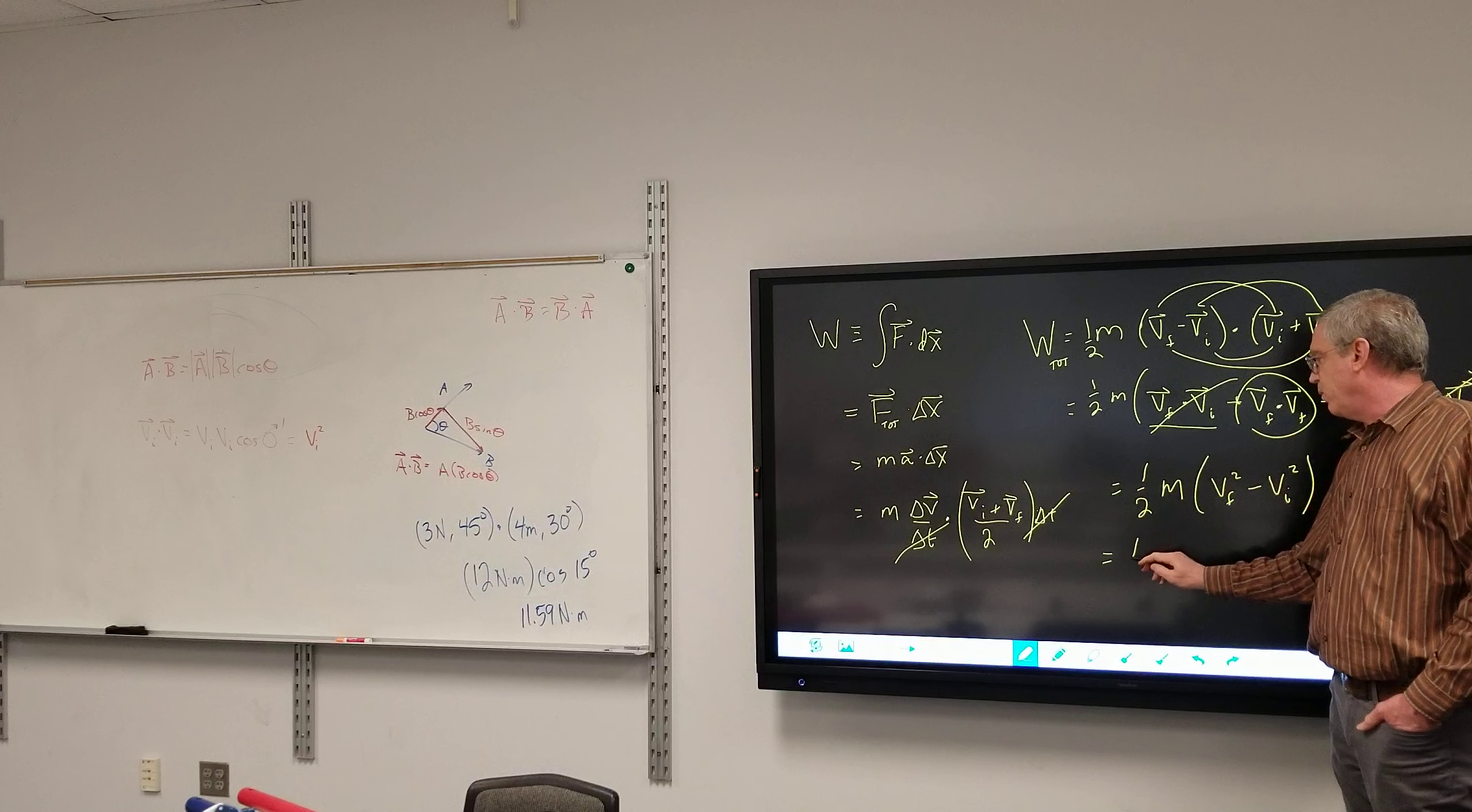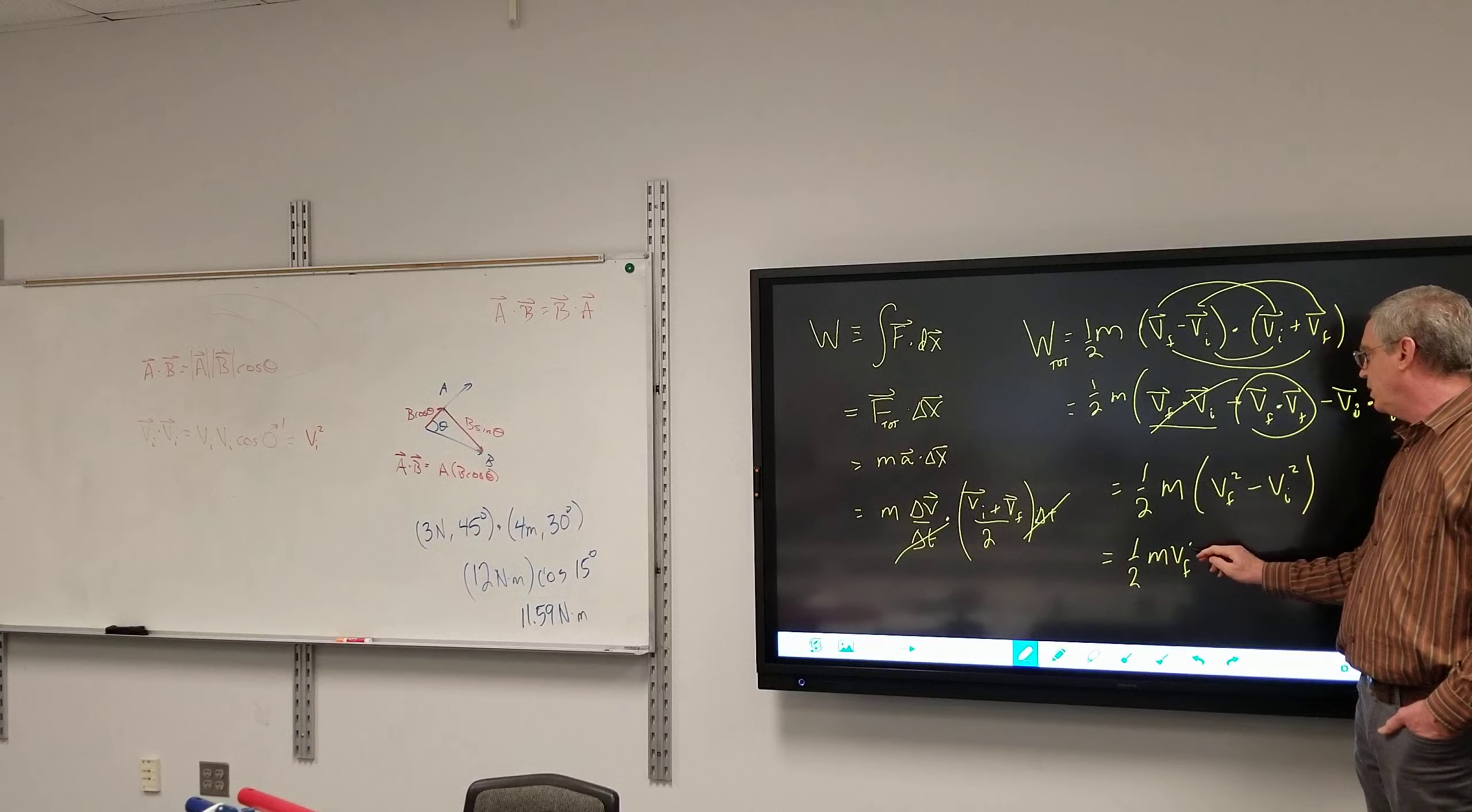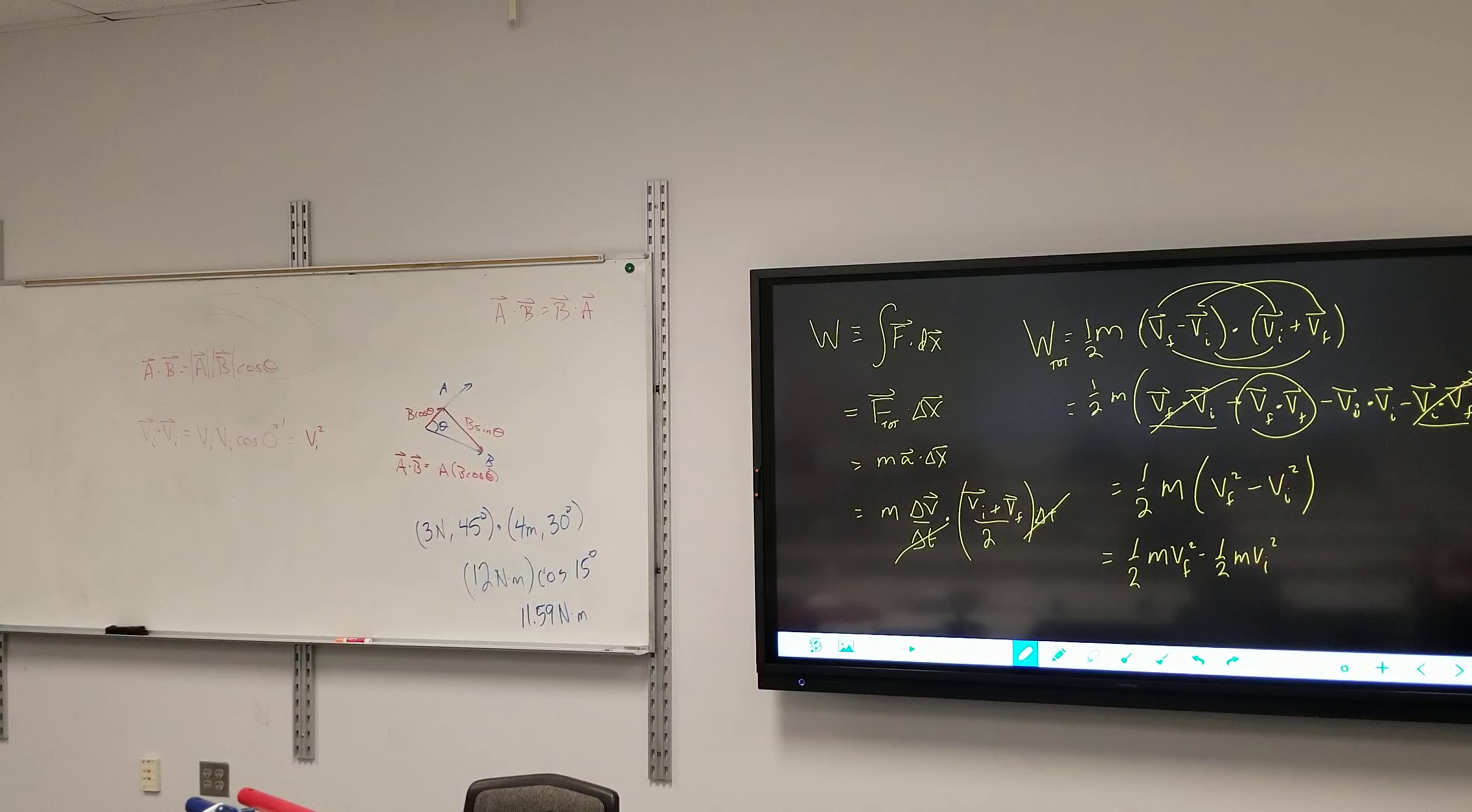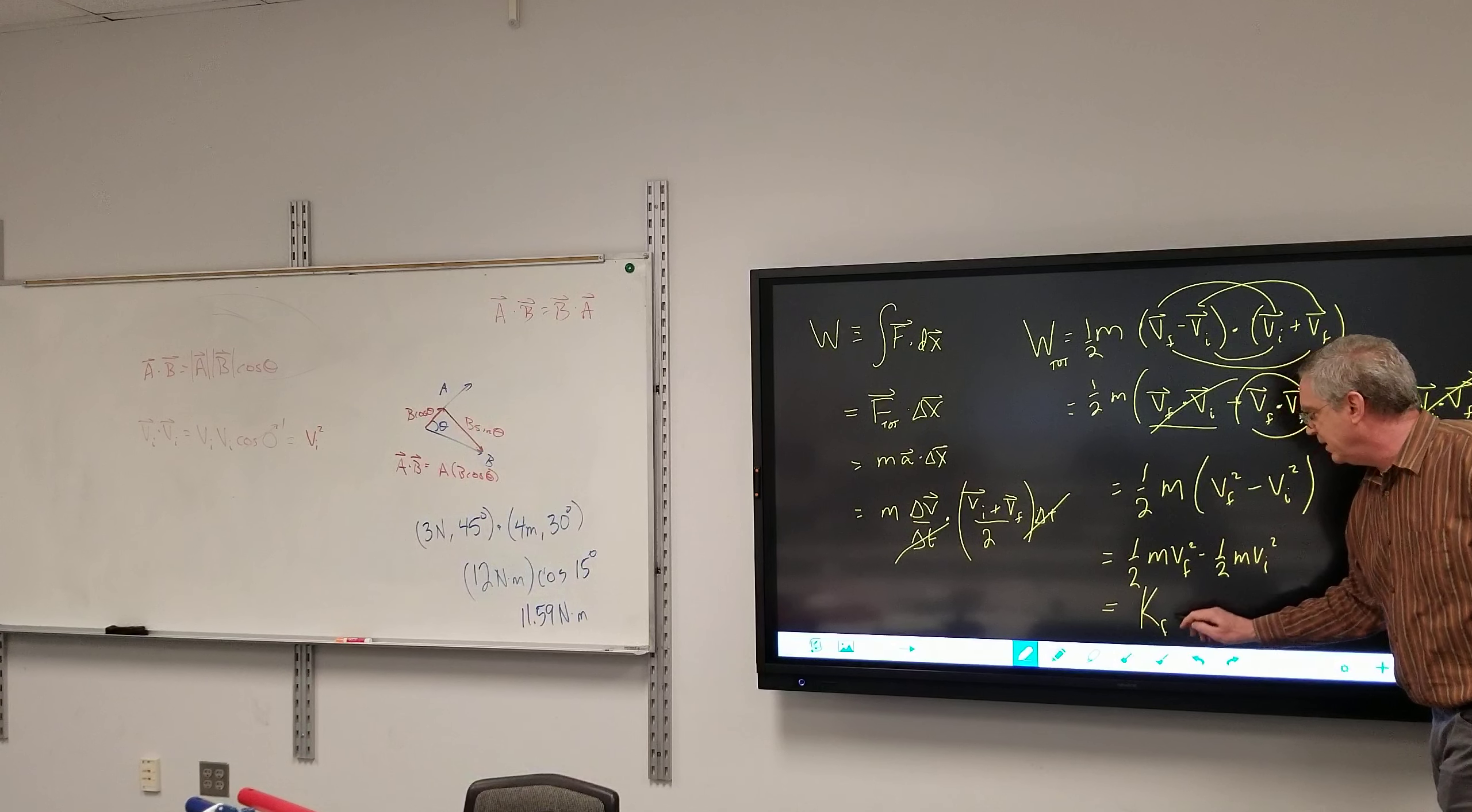So this vf dot vf is just the final speed squared, minus vi dot vi which is the initial speed squared. If I distribute, I get one-half mvf squared minus one-half mvi squared. It may not look like much, but this is actually rather important. Physicists in their desire not to write much said, let's come up with a letter to symbolize it. How about capital K? We'll let capital K equal one-half mv squared. Therefore, this would just be k final minus k initial, in other words delta k.